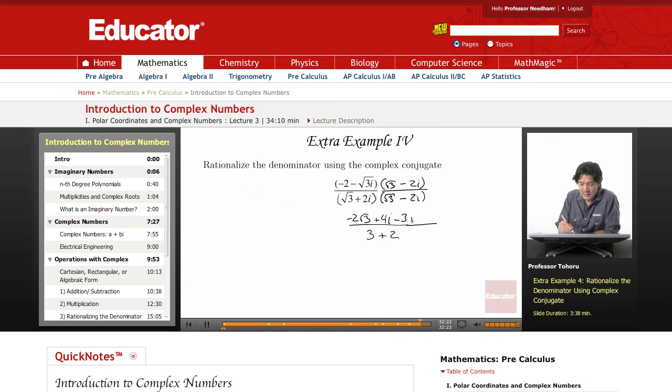This becomes minus times a minus is a plus, 2 root 3, and then i squared. I don't mind you skipping this step, but definitely use the i squared up here.